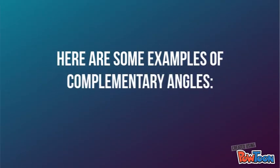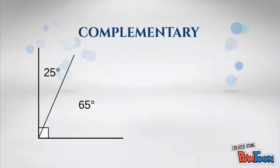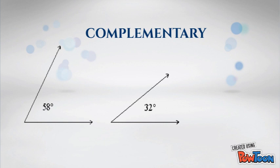Here are some examples of complementary angles. These angles are complementary because 25 degrees plus 65 degrees equals 90 degrees. Another example: 58 degrees and 32 degrees. If you add them, it equals 90 degrees. Therefore, they are complementary.